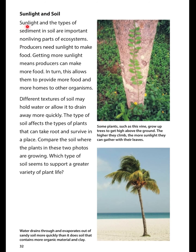Sunlight and the types of sediment and soil are important non-living parts of ecosystems. Producers need sunlight to make food. Getting more sunlight means producers can make more food, which in turn allows them to provide more food and more homes to other organisms. Different textures of soils may hold water or allow it to drain away more quickly. The type of soil affects the types of plants that can take root and survive in a place. Compare the soil where the plants in these two photos are growing — which type of soil seems to support a greater variety of plant life: the forest or the beach?